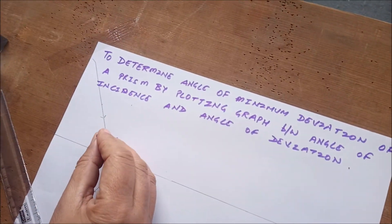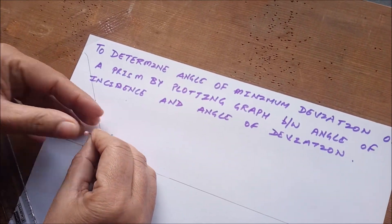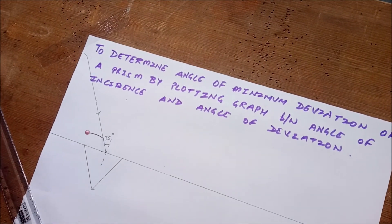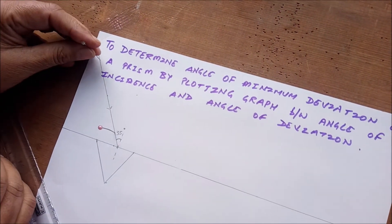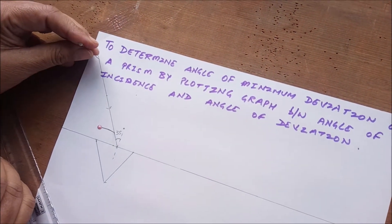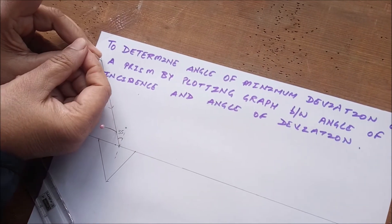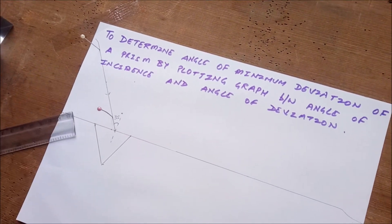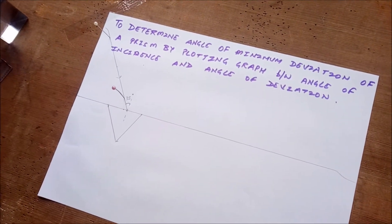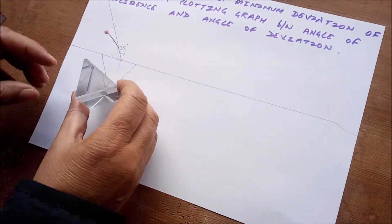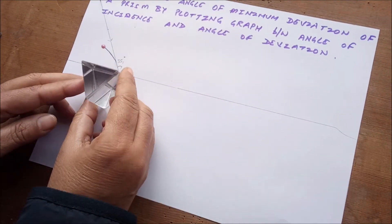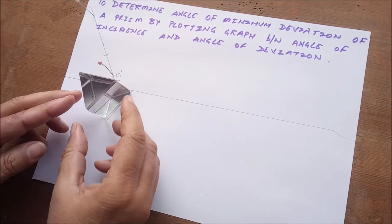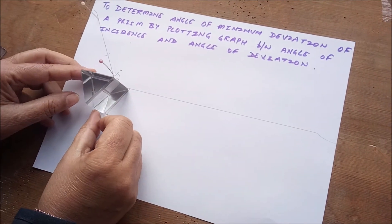Now fix two pins on this incident ray. Note that the distance between the pins should be maximum — a key precaution is that the distance between them should be five to six centimeters. Place the two pins and then replace the prism back.